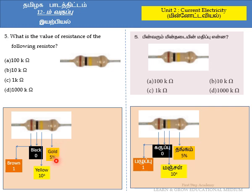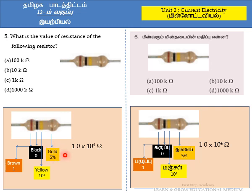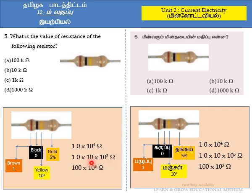The final color is gold, where the tolerance is 5%. We are going to find the answer from the given options. The first digit is 1, the second digit is 0, and the multiplier is 10 to the power 4. So the value is 10 × 10⁴ ohm. This can be rewritten as 10 × 10 × 10³ ohm, which equals 100 × 10³ ohm. Since 10³ represents kilo, the final value is 100 kilo ohm.